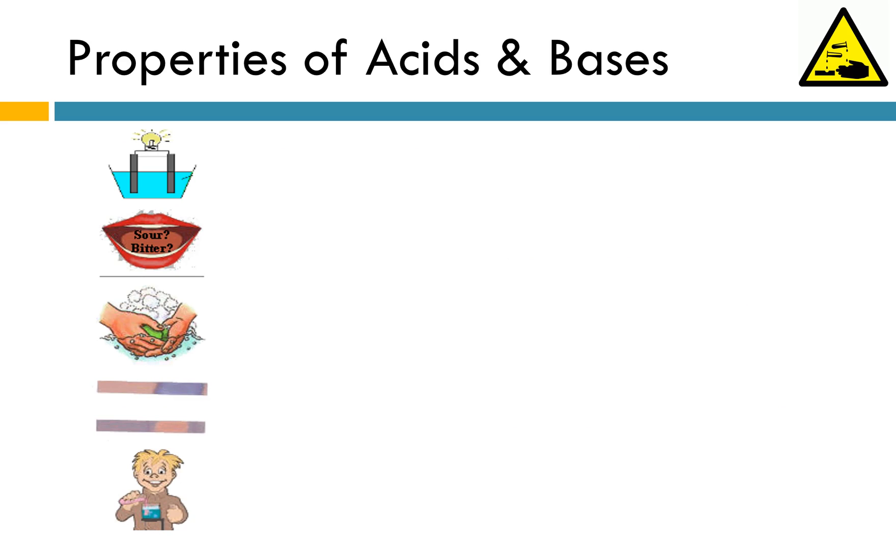Let's talk a little bit about properties of acids and bases. Hopefully you remember that this apparatus is referring to something being electrolytic. Because acids and bases are going to break apart into ions, they're going to be classified as electrolytic solutions. Hopefully you remember that electrolytic means able to conduct electricity and that all stems from freely moving ions in solution.